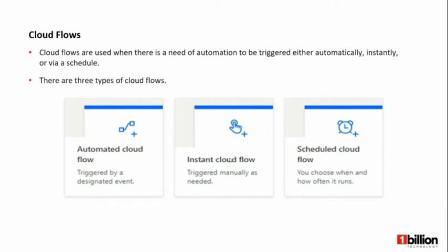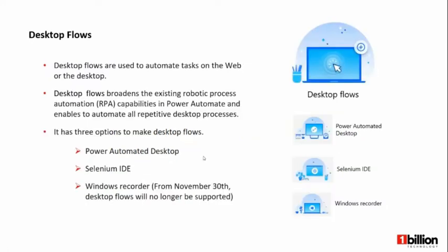In those cases, we can use scheduled cloud flows where we configure the time, and the flow will run according to the configured schedule. Those are the basic three subtypes of cloud flows. Then we have desktop flows. With the introduction of robotic process automation capabilities, we can now use Power Automate on desktops as well.